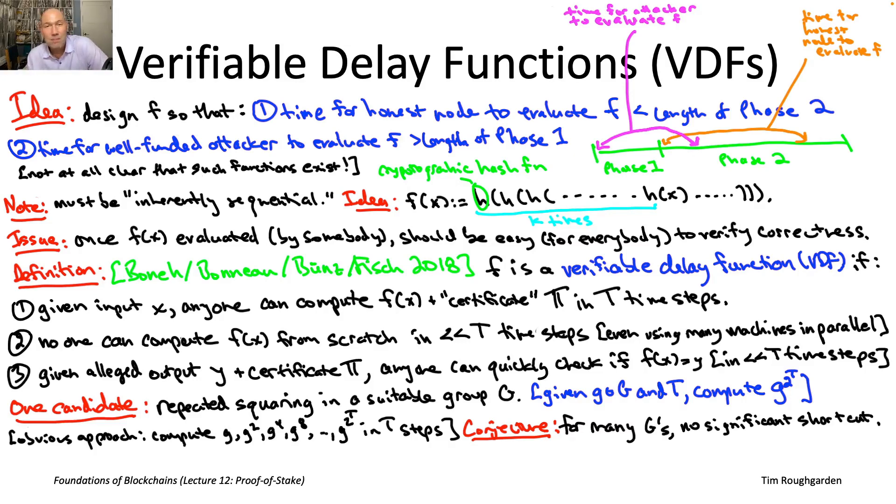Now there's a big difference, of course, between these examples, which is that factoring and discrete logarithm have been around for a very long time. I mean, arguably they've been around for millennia, but computer scientists have been trying to come up with efficient algorithms for both of those problems for almost a half century now.